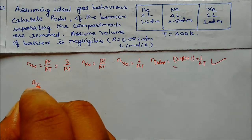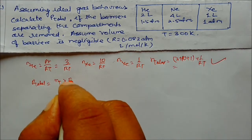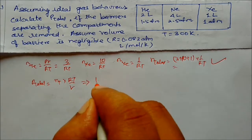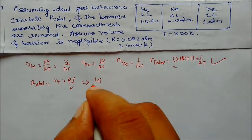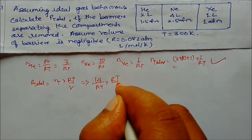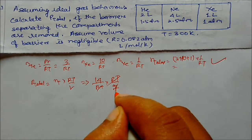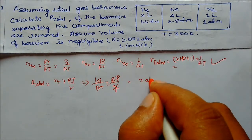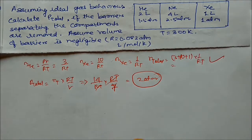Now total pressure: P_total = n_total × RT / V. Substituting, we get (14/RT) × RT / V. The RT cancels, and total volume V = 4 + 2 + 1 = 7 liters. So we get 14/7 = 2 atmospheres. That is the total final pressure.